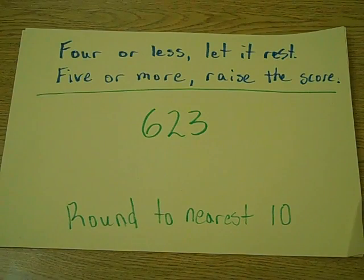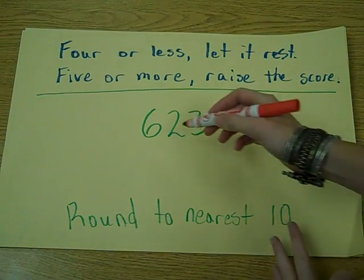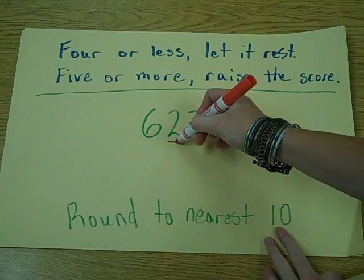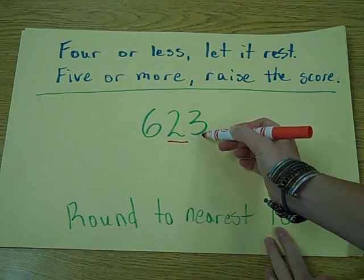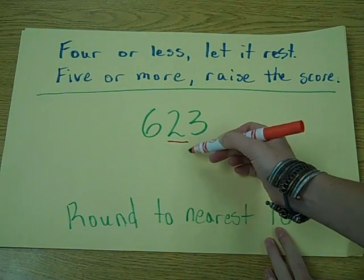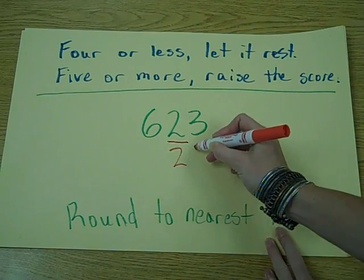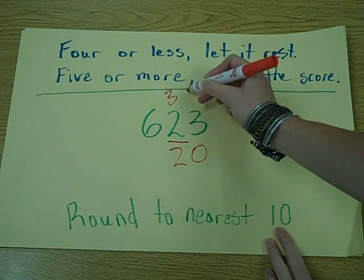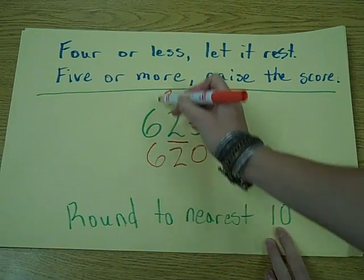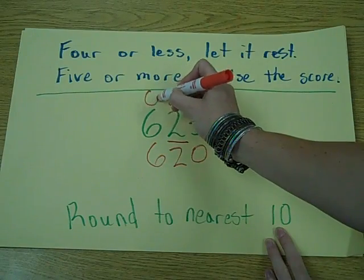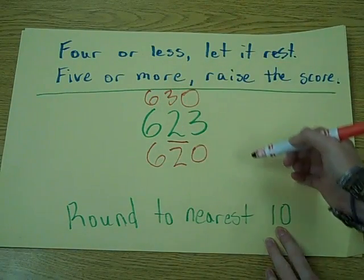So if we're going to round to the nearest ten in a hundreds number, we look at the tens place right here, which has a two. Twenty-three is in between what two tens? Twenty and thirty. But we can't forget that it is a hundreds number, so six hundred twenty and six hundred thirty.